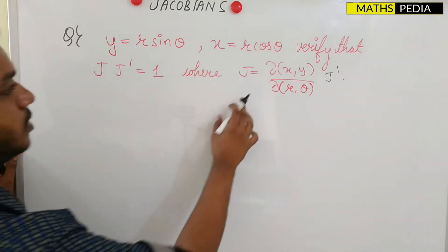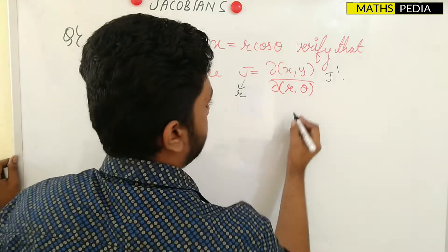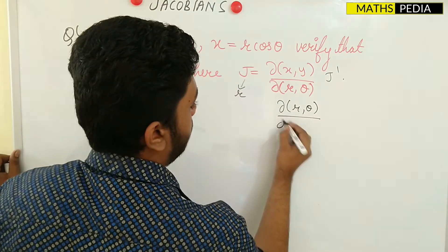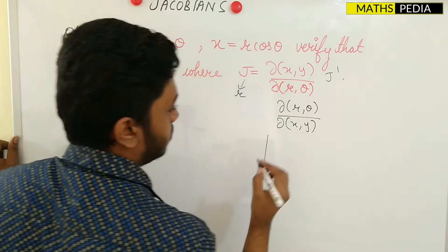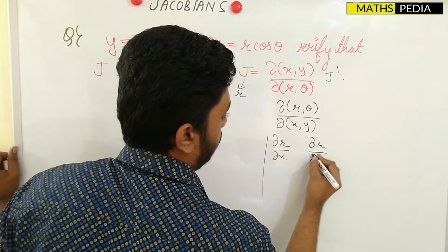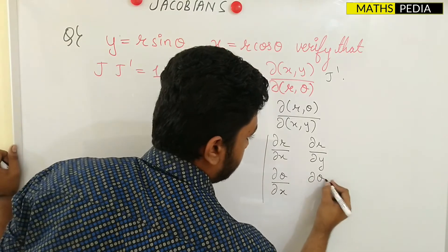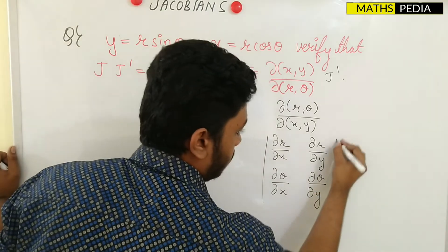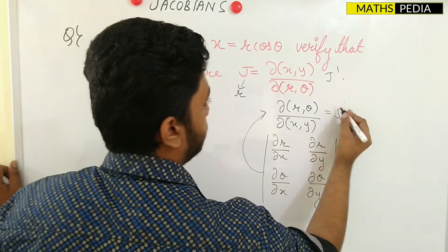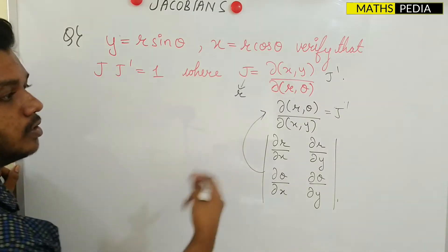Now we need to find J' = ∂(r,θ)/∂(x,y), the reciprocal form. The determinant for J' is: ∂r/∂x, ∂r/∂y in the first row and ∂θ/∂x, ∂θ/∂y in the second row. We need to verify that J·J' = 1, and since J = r, we need J' = 1/r.